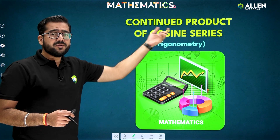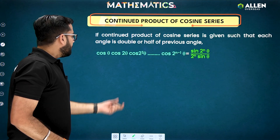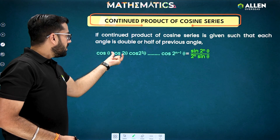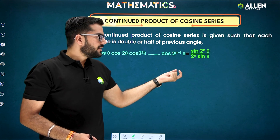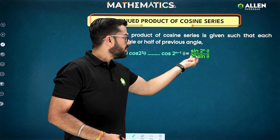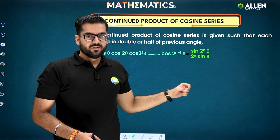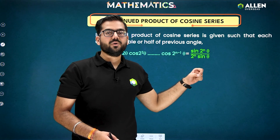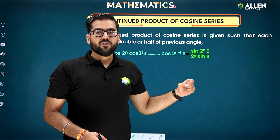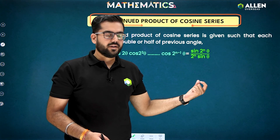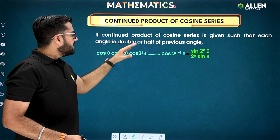Today's topic is the continuous product of cosine series, which is under the trigonometry chapter. The concept is simple: if you have a series like cos θ · cos 2θ · cos 2²θ and so on till cos(2^(n−1))θ, the result you need to remember is sin(2^n · θ) upon 2^n · sin θ. But we need to understand how it comes, because if you have a good command of the concept, you should know the exact story behind it.